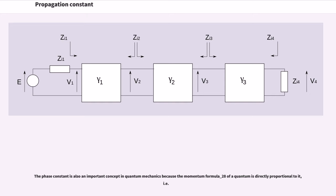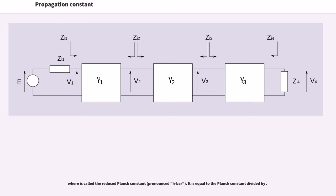The phase constant is also an important concept in quantum mechanics because the momentum p of a quantum is directly proportional to it: p = h_bar*k, where h_bar is called the reduced Planck constant. It is equal to the Planck constant h divided by 2*pi.